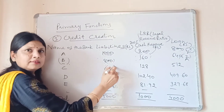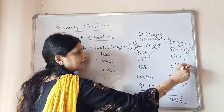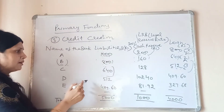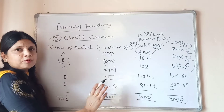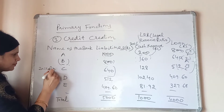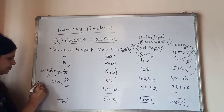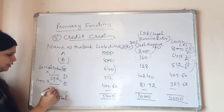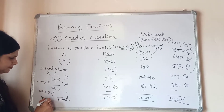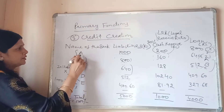This process continues until the total deposits reach the amount given by the formula: Initial Deposits multiplied by 1 divided by LRR. For example, initial deposit is 1,000 rupees and LRR is 20% (i.e., 1/5), so the total comes to 5,000 rupees. This process continues until the amount reaches 5,000 rupees. In this way, banks perform credit creation.